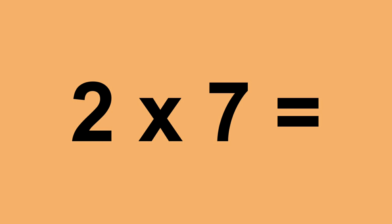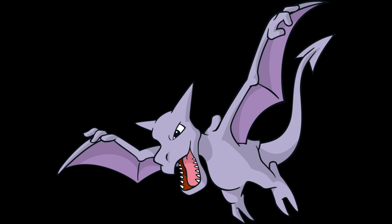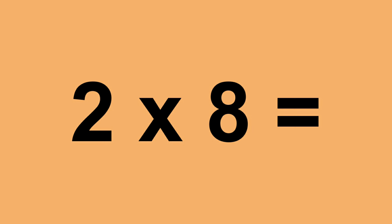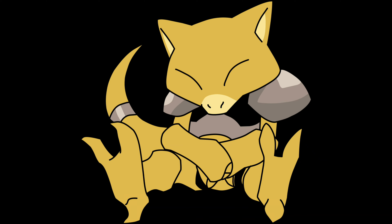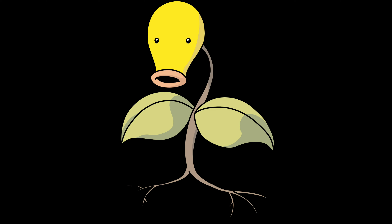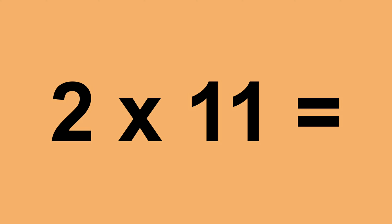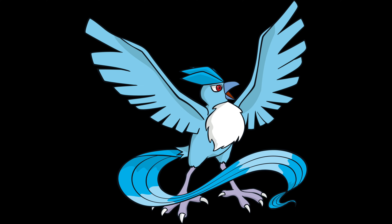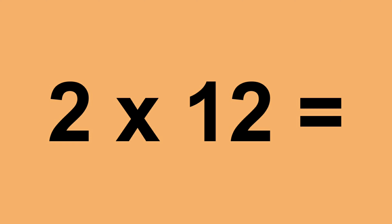Two times seven equals fourteen. Two times eight equals sixteen. Two times nine equals eighteen. Two times ten equals twenty. Two times eleven equals twenty-two. Two times twelve equals twenty-four.